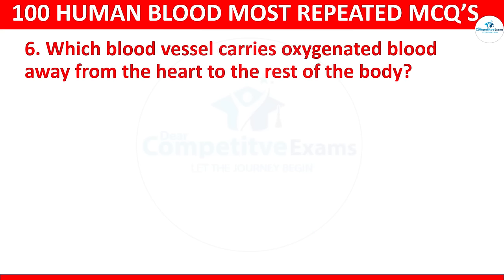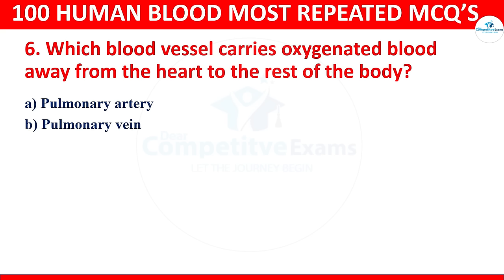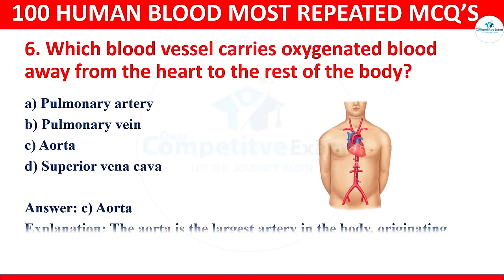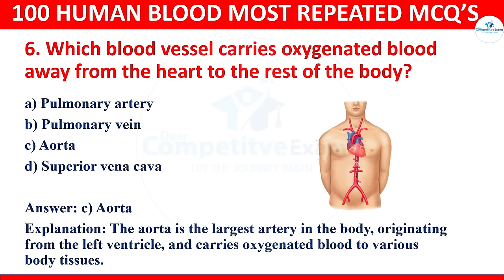Question 6: Which blood vessel carries oxygenated blood away from the heart to the rest of the body? Options: pulmonary artery, pulmonary vein, aorta, or superior vena cava. The correct answer is the aorta. The aorta is the largest artery in the body, originating from the left ventricle and carrying oxygenated blood to various body tissues.